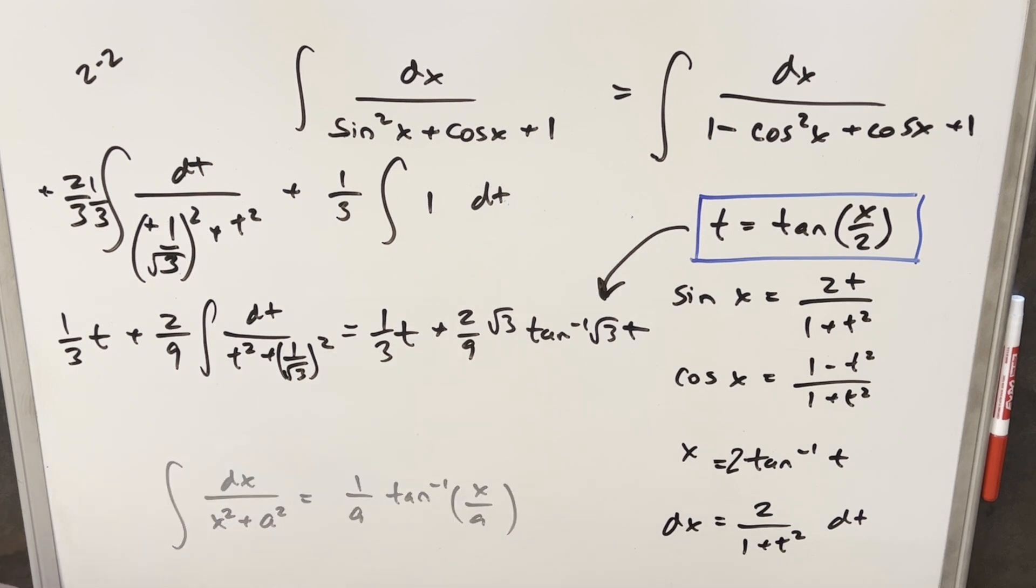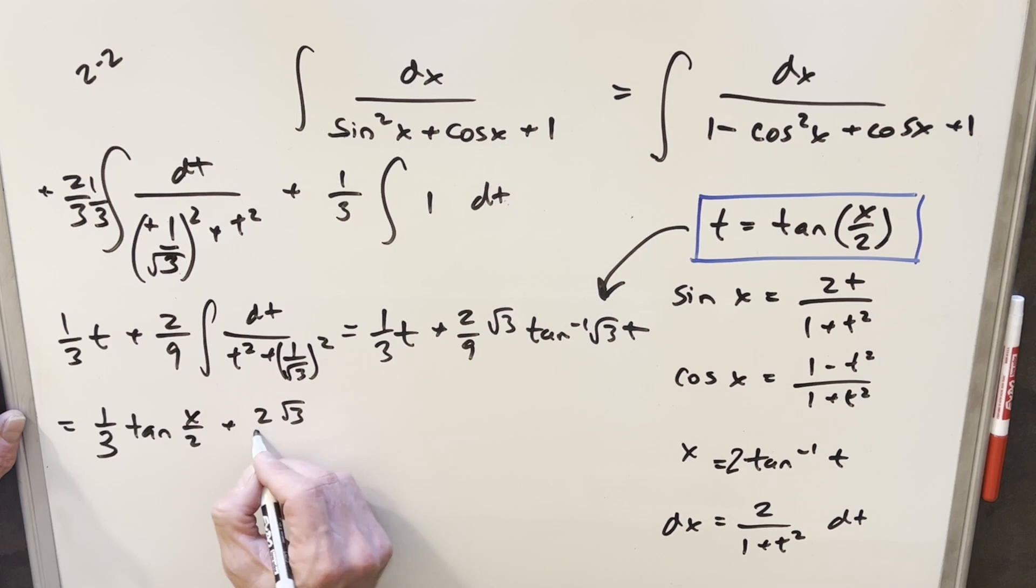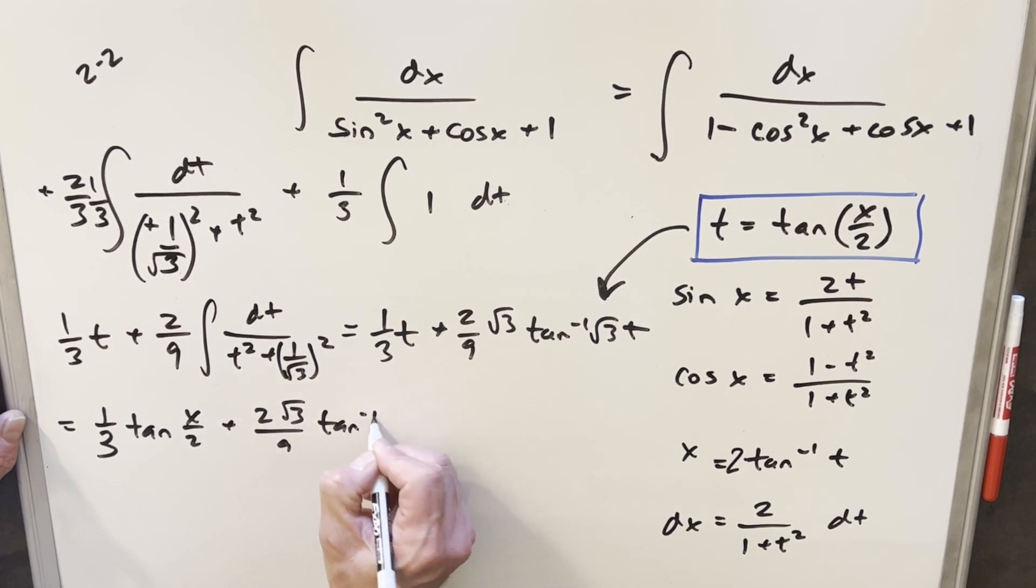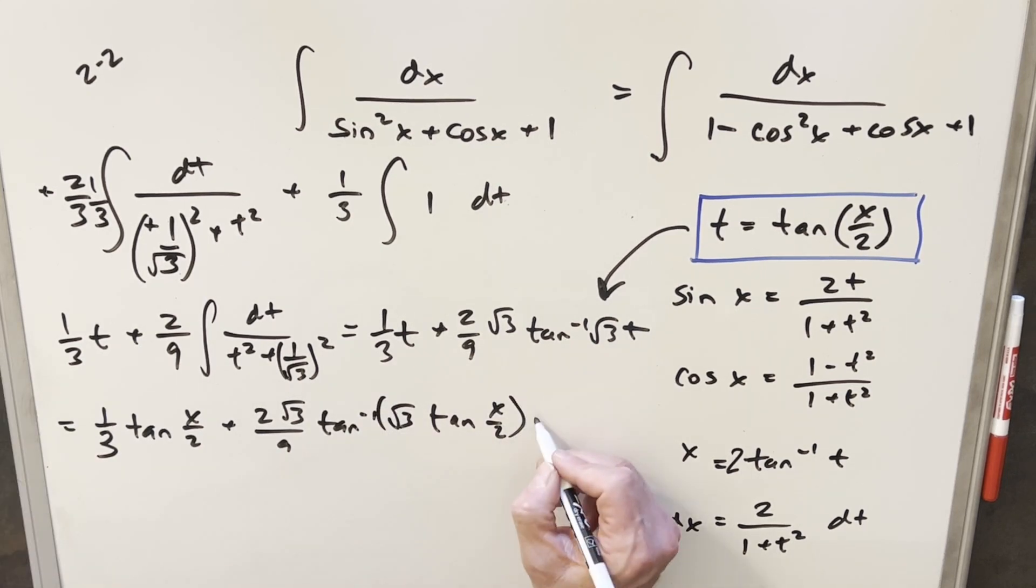Again, t is just going to be tan x over 2. So we're going to have, plugging in here, 1 third tan x over 2 plus 2 square root of 3 over 9, arctan, square root of 3, tan x over 2, put parentheses, plus c, and that's it.